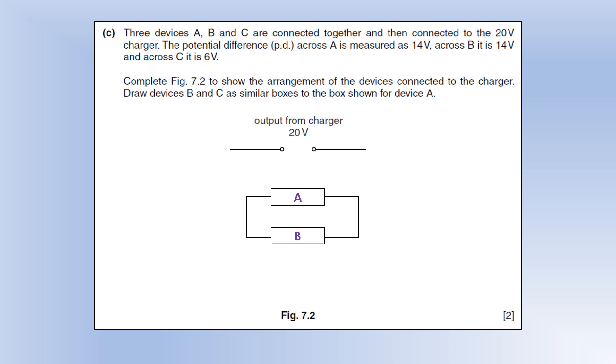Now the PD across C is 6 volts, which must mean it's in series with those two, giving us a total potential difference of 20 volts. Remember as we go around, the potential difference total should be 20 volts equal to the EMF. You can see we'd lose 6 volts across C and 14 across A and B, giving us a total of 20.